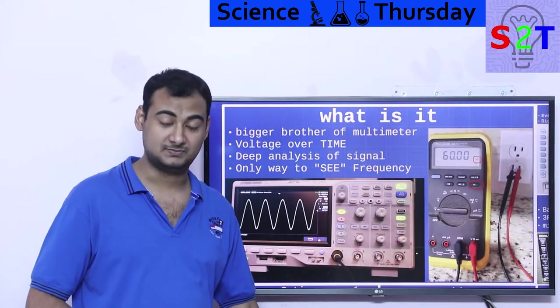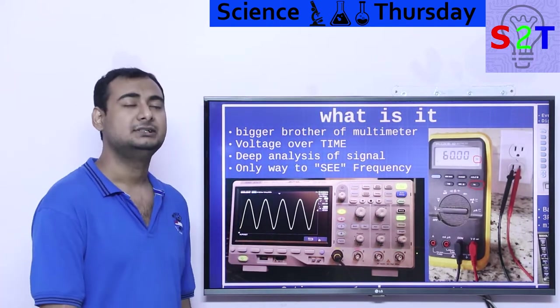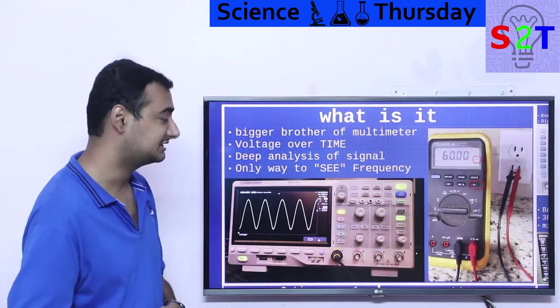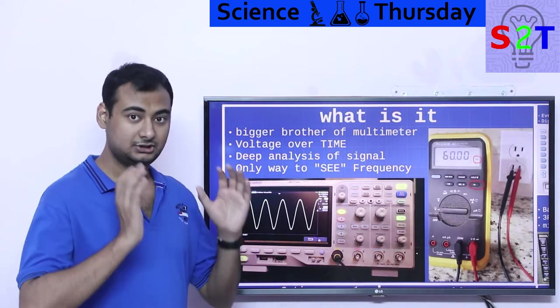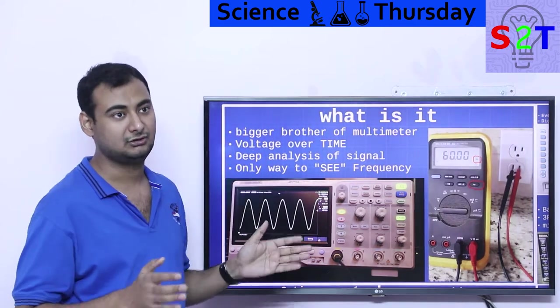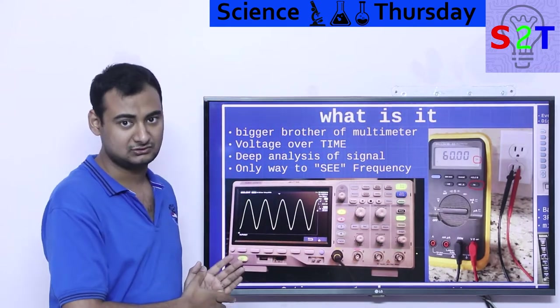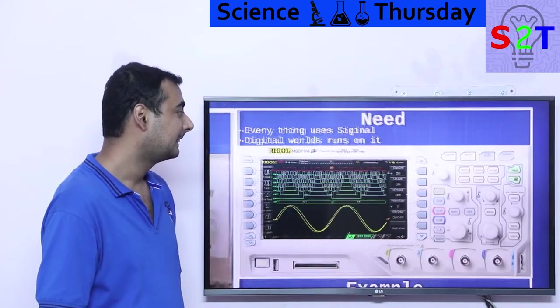To see that, you have to use oscilloscope. That's the whole point. Anything that has frequency, you have to see it or at least mathematically grasp it somewhere to understand what the hell is going on. For this reason, to see the waveform, to see the signal, to see the frequency, you have to use an oscilloscope. It's not an option. This is the only way to see.